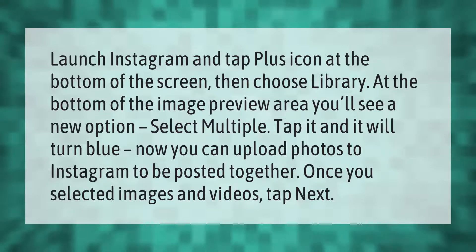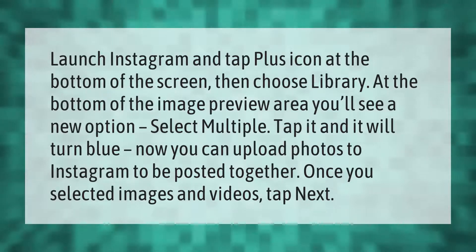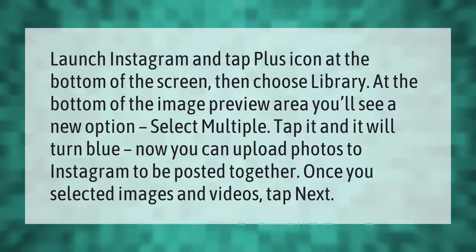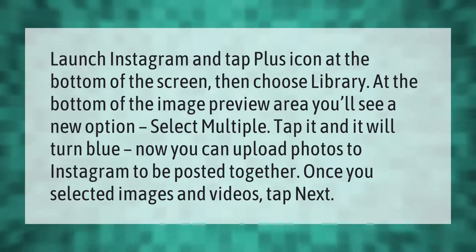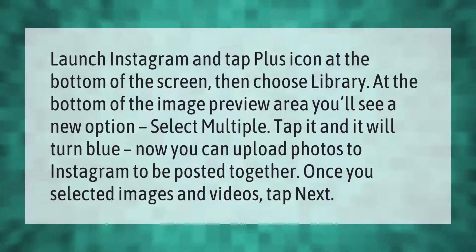Launch Instagram and tap the plus icon at the bottom of the screen, then choose Library. At the bottom of the image preview area, you'll see a new option: Select Multiple. Tap it and it will turn blue. Now you can upload photos to Instagram to be posted together. Once you've selected your images and videos, tap Next.